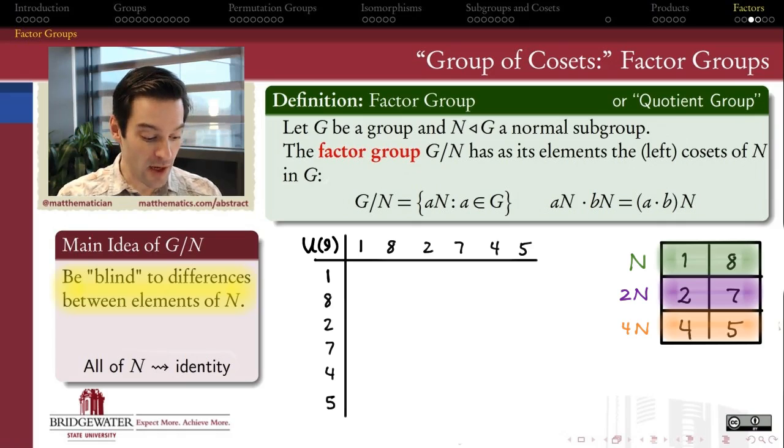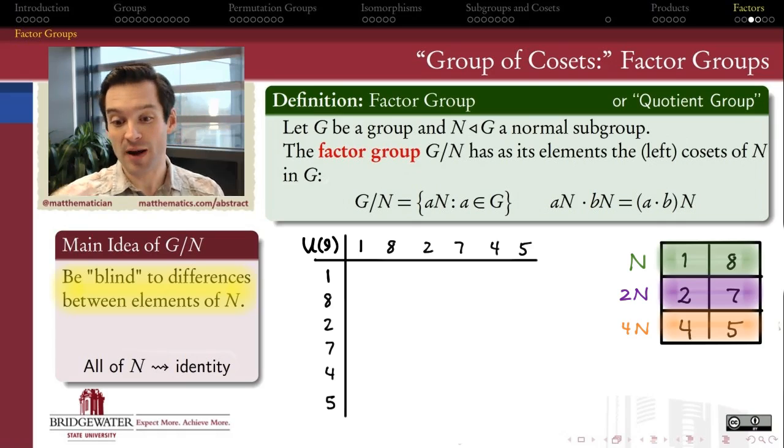And then what I'm going to do is rearrange the Cayley table of U(9) in a way that gets my normal subgroup together. So it puts my 1 and 8 here at the head of the line. And then it puts my second coset here next to one another. It puts the elements of my other coset, 4 and 5, next to one another. So all I've done is I've taken the Cayley table and I've just rearranged the rows and rearranged the columns. That's something that we agreed a long time ago doesn't change the fundamental algebraic structure of this group. It only changes the way in which we draw its multiplication table, which doesn't matter from an abstract algebra standpoint.